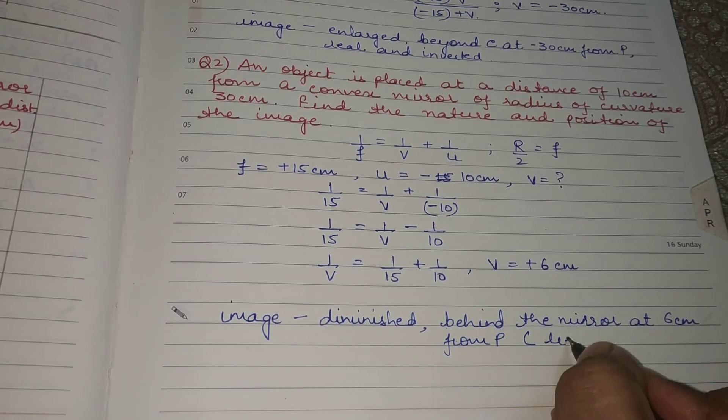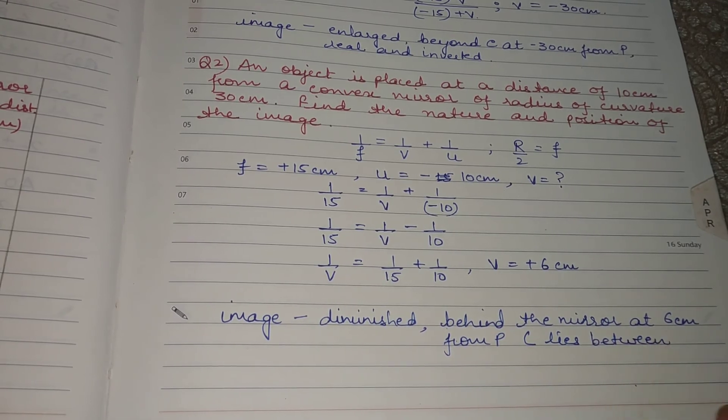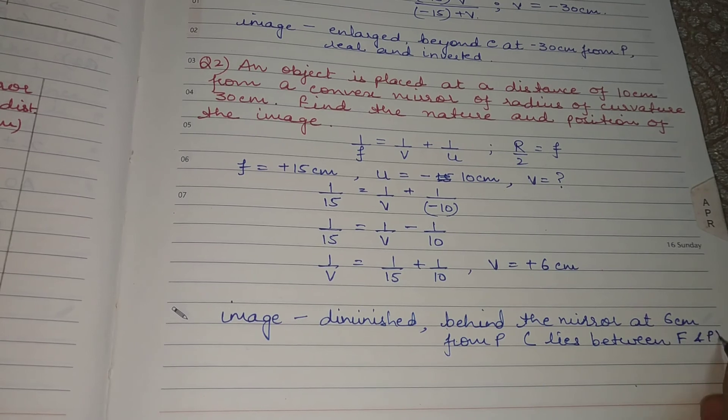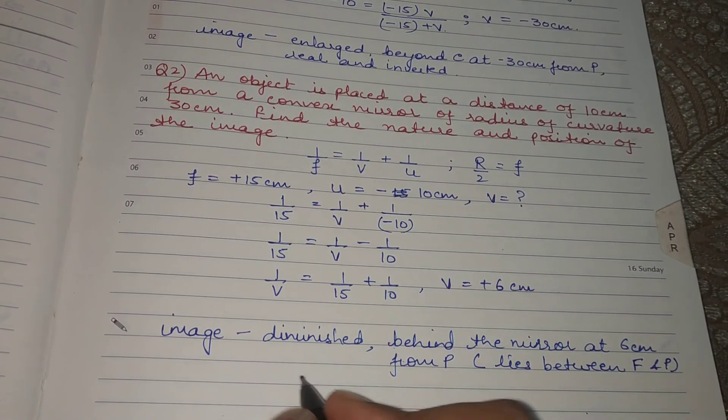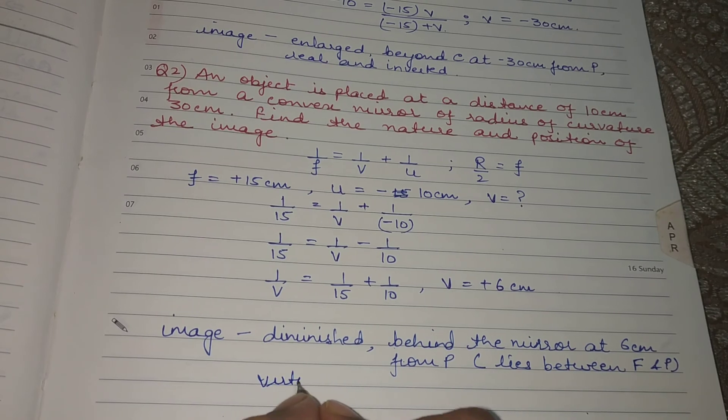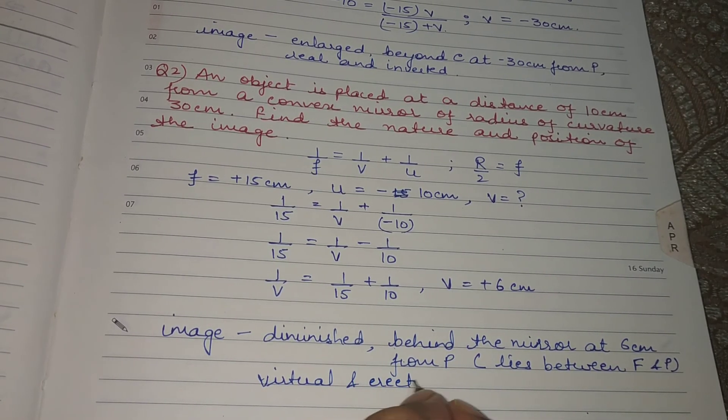That means it lies between f and p. f is the virtual focus here. It is virtual. This image is virtual in nature and virtual images are erect.